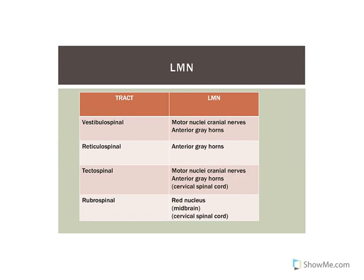Regarding lower motor neurons: for the vestibulospinal tract and tectospinal tract, lower motor neurons may be located in the motor nuclei of cranial nerves if they affect the head or neck. All four tracts can have lower motor neurons in the anterior grey horns of the spinal cord. One difference is that the tectospinal and rubrospinal tracts only descend as far as the cervical spinal cord, while the vestibulospinal and reticulospinal tracts descend all throughout the spinal cord.